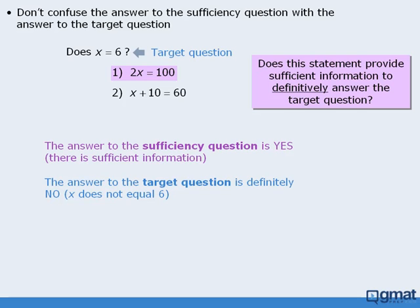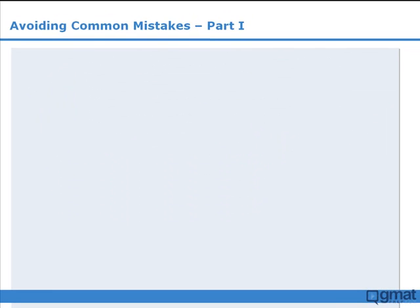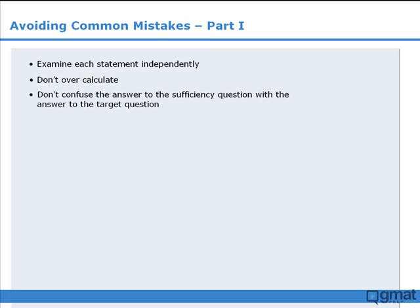Now let's finish this question. Statement 1 is sufficient, and statement 2 is also sufficient, which means the correct answer here is D. To summarize, you can avoid common errors if you examine each statement independently, do not over-calculate, and do not confuse the answer to the sufficiency question with the answer to the target question.